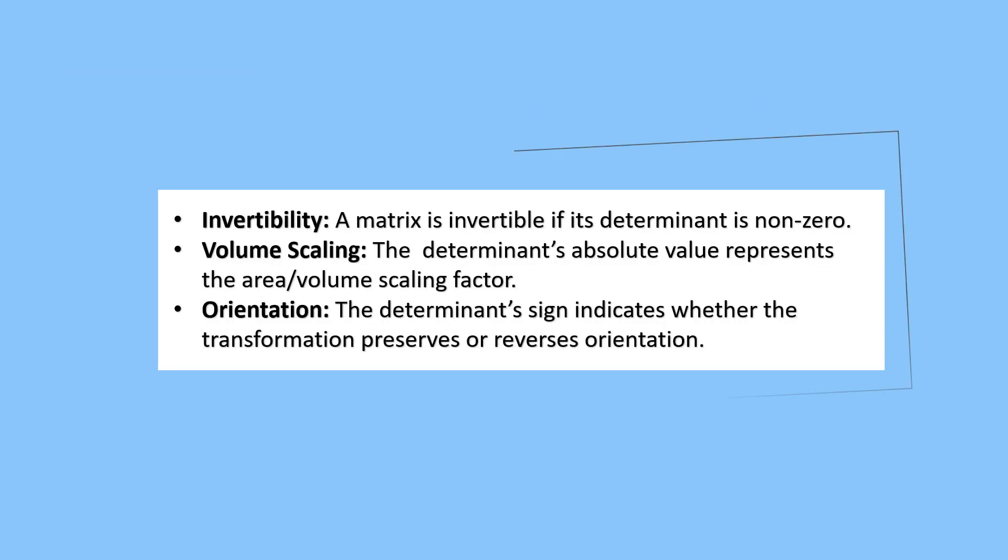All the phenomena we have observed so far, and many more that occur when transforming vectors by multiplying by matrices, can be explained by a powerful measure of a matrix called the determinant. In essence, the determinant determines these crucial characteristics of a matrix, which is why it is aptly named.